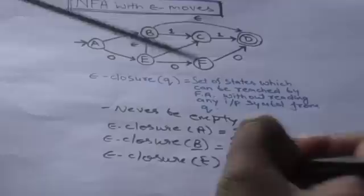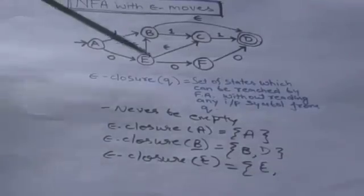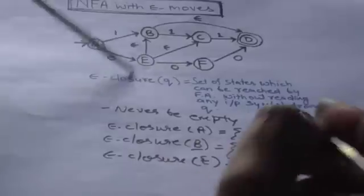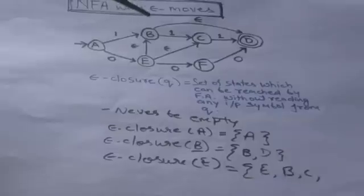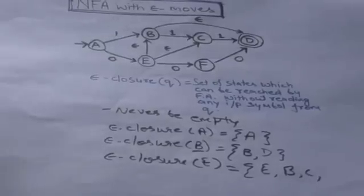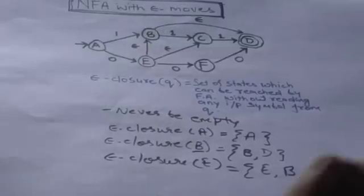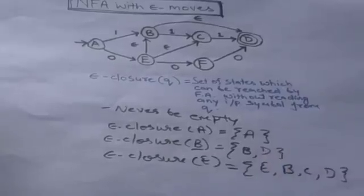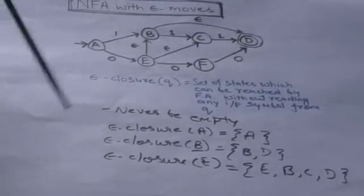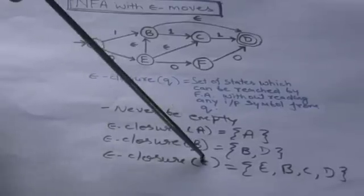Now look at the empty closure of E. First, the set will contain the state itself, which is E. From E there are two states the machine can jump to with empty moves: B and C, so include them. Now check the empty transitions of B and C. C doesn't have any empty transition, whereas B has an empty transition to D, so we include D as well. D also doesn't have any empty move.